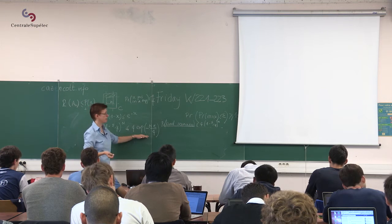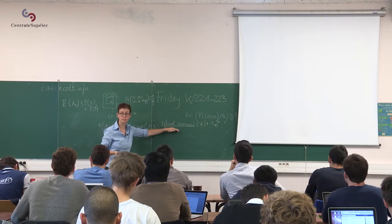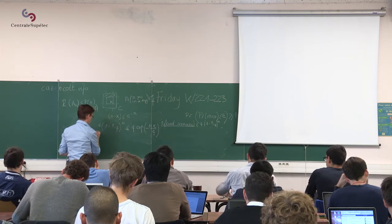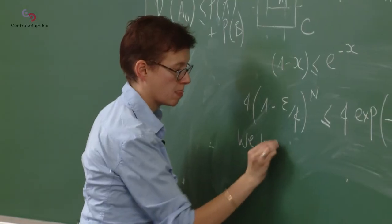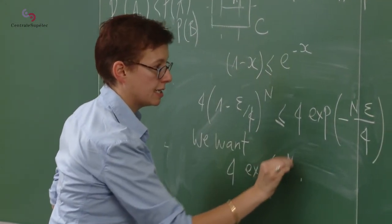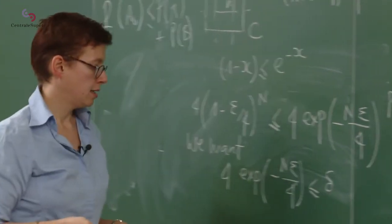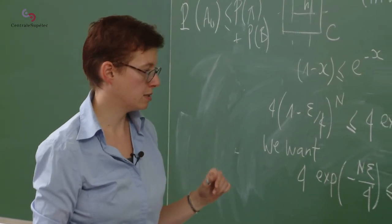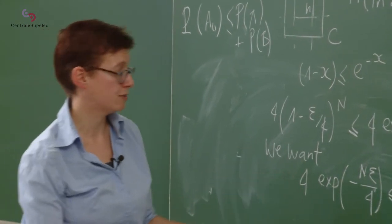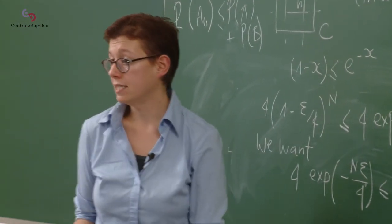So 4 times 1 minus epsilon over 4 to the n is bounded by 4 times exponential minus n epsilon over 4. So I've used x equals epsilon over 4, and I've used that exponential of something to the power of n is exponential of n times that something. So now I'm going to bound this by delta. If I bound this by delta, then I bound this by delta, then I bound my probability of bad scenario by delta.